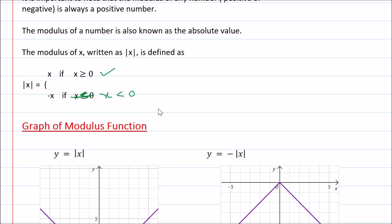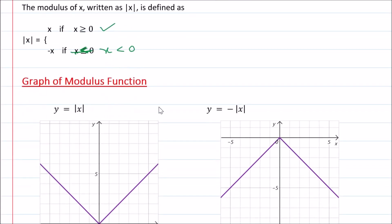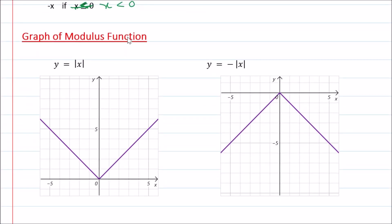Now we will see what kind of graph we get when we graph a Modulus function. This is the parent function: y equals Mod of x. When you graph it, we get a V-shaped graph. If you take some points — if x equals 1, y is also 1; so the point is (1, 1). Same way: (2, 2), (3, 3), (4, 4), (5, 5) and so on.